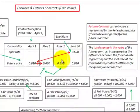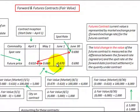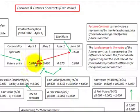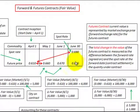In summary, the key point of a futures contract is that its current value is represented by the market exchange price or the forward exchange rate for the futures contract. The total change in value of the futures contract is measured as the difference between the forward rate — the agreed-on rate at the contract inception date — and the spot rate at the forward date or contract settlement date. You then take that difference times the quantity under contract, and that gives you the total change in value of the futures contract.